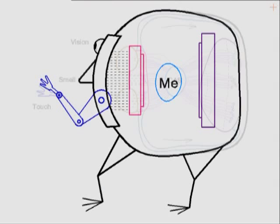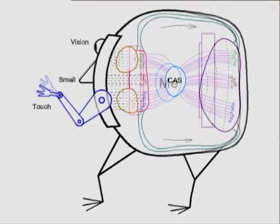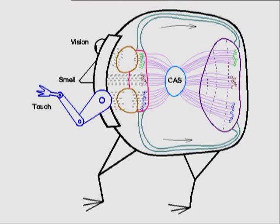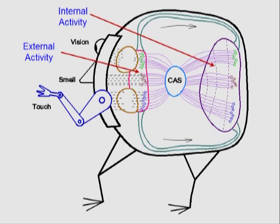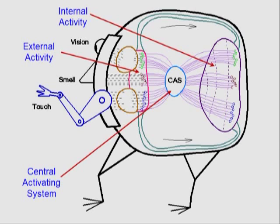So in this new scheme, instead of two screens, we have two modules — one pertaining to external activity and one pertaining to internal memory-related activity. Like the previous schemes, there's still an element in the middle. This time, however, it's called the central activating system. More on this later.